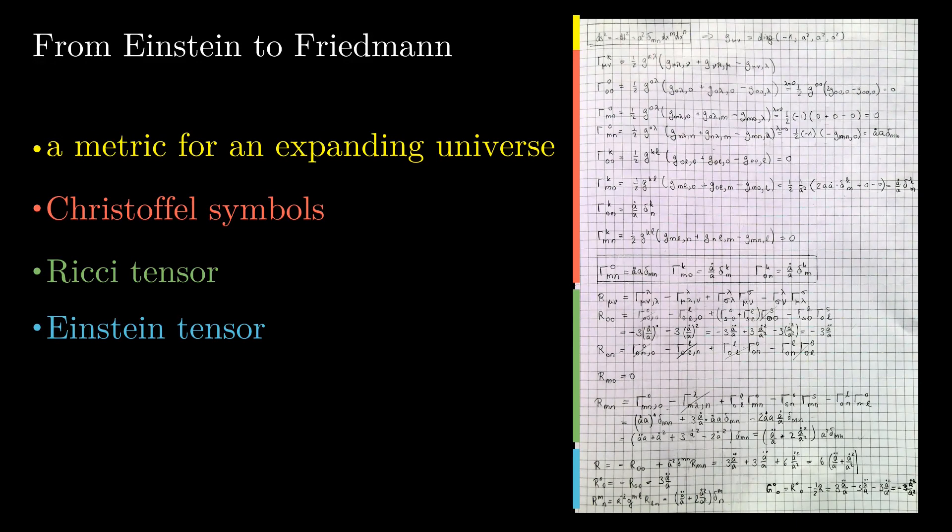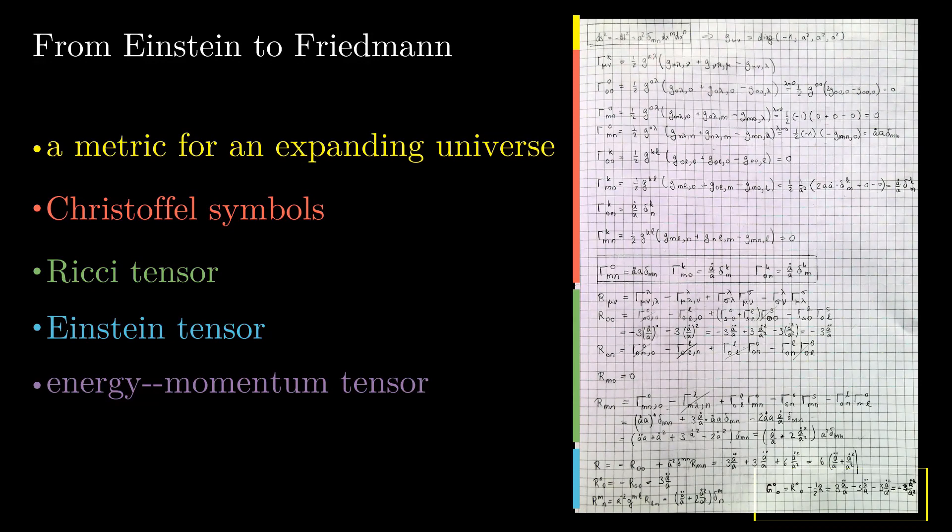Combined with the energy-momentum tensor of a homogeneous and isotropic matter distribution, one of Einstein's field equations reduces to the Friedman equation that was used for the determination of the age of our universe. Let's have a closer look at the metric that is the dynamic field and that describes the geometry of the spacetime. It is actually not difficult to understand.